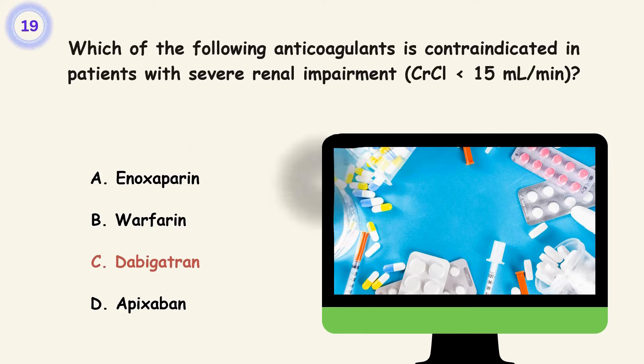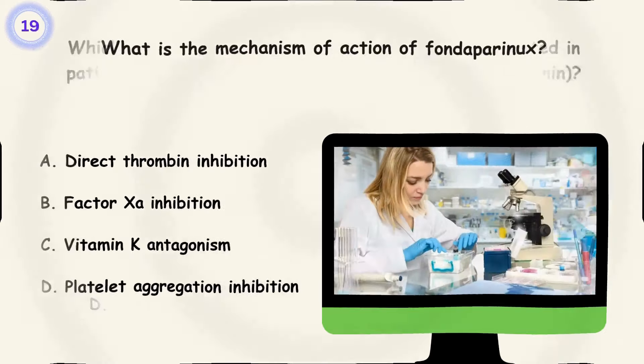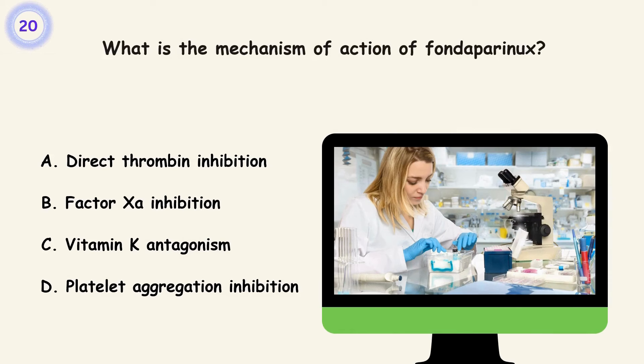Question 20. What is the mechanism of action of fondaparinux? A. Direct thrombin inhibition. B. Factor Xa inhibition. C. Vitamin K antagonism. D. Platelet aggregation inhibition. Answer is B. Factor Xa inhibition.